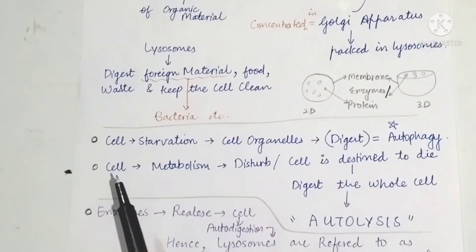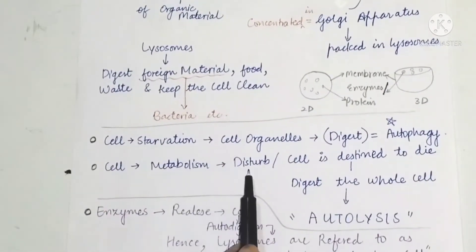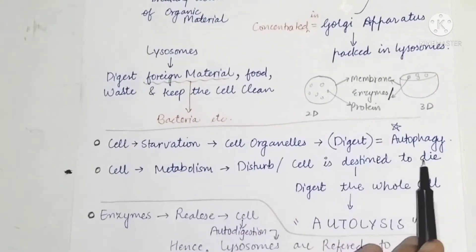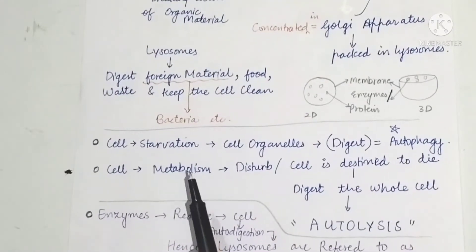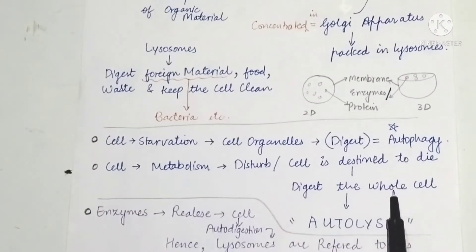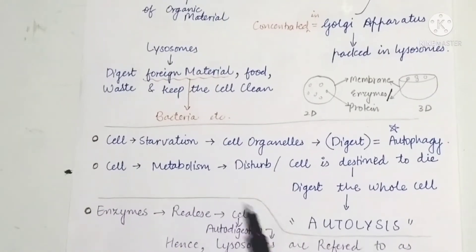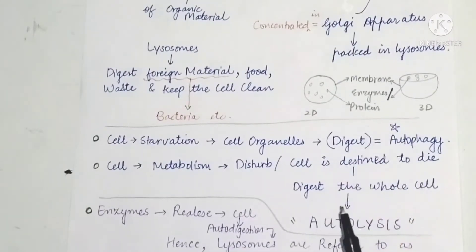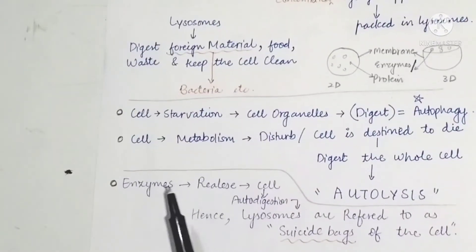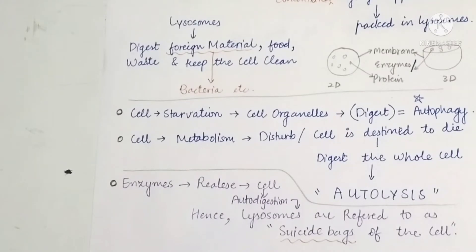Sometimes the cell's metabolism gets disturbed, or the cell is destined to die. At this time, lysosomes digest the entire cell. When they digest the whole cell, that is called autolysis. The lysosomes burst inside the cell, releasing their enzymes, which then perform digestion of the entire cell.